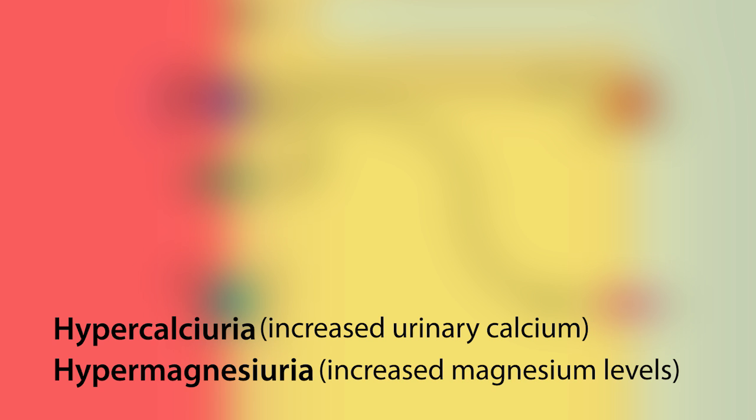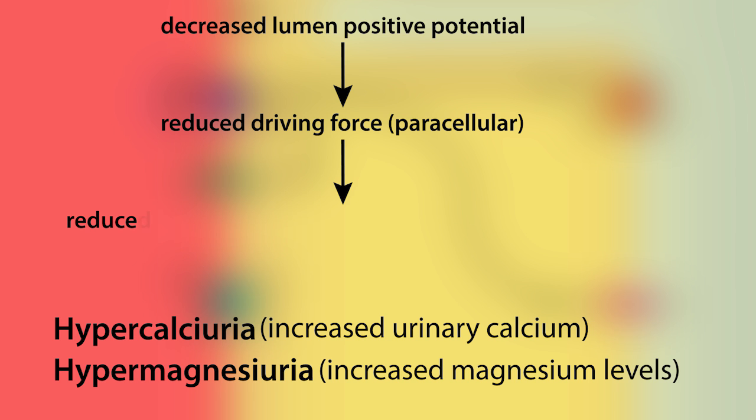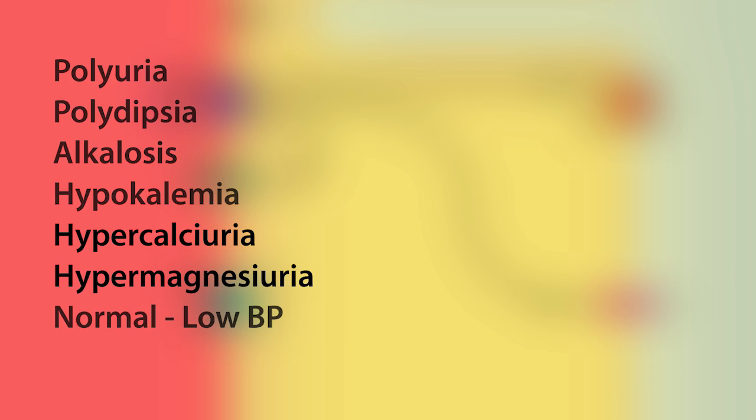The hypercalciuria and hypermagnesuria, in other words increased urinary calcium and magnesium, occurs because of a decrease in the lumen-positive potential, which reduces the driving force for the paracellular reabsorption of calcium and magnesium ions as well as sodium ions.